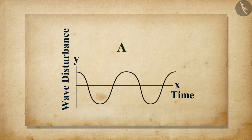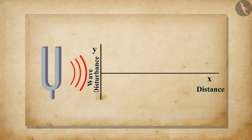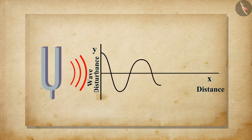For sound, the unit of amplitude will be that of pressure or density. As a sound travels from a source, its amplitude and loudness decrease. A louder sound can travel to a larger distance than a soft sound.